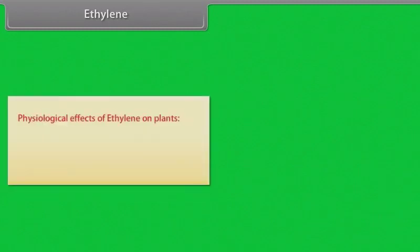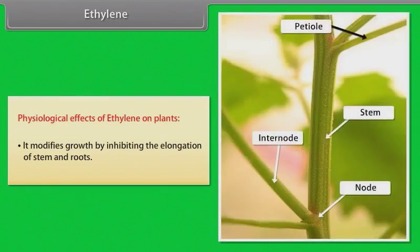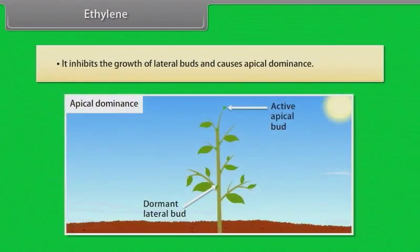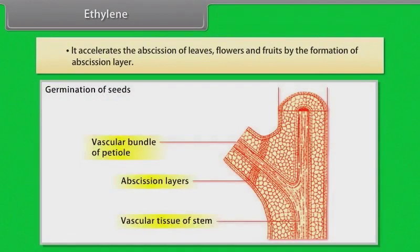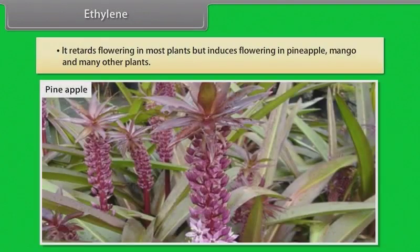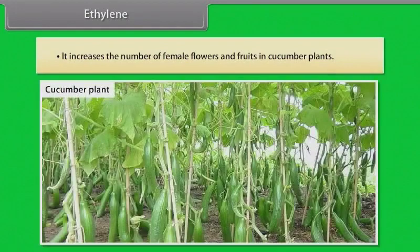Physiological effects of ethylene: It modifies growth by inhibiting the elongation of stem and roots. It inhibits the growth of lateral buds and causes apical dominance. It accelerates the abscission of leaves, flowers and fruits by formation of the abscission layer. It retards flowering in most plants but induces flowering in pineapple, mango and many other plants. It increases the number of female flowers and fruits in cucumber plants.